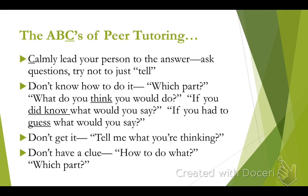The letter C of the ABCs of peer tutoring is to calmly lead your person to the answer. Ask questions — try not to just tell them, because in general it will be a better learning experience if they can figure out what they're not getting. If a student says 'I just don't know how to do this,' ask those specific questions: Which part? What do you think you would do? Questions like, 'If you did know, what would you say?' And my favorite: 'If you had to guess, what would you say?' That takes the pressure off, and eight or nine times out of ten the person will guess correctly. If a student says 'I just don't get it,' ask them a question to help them explain what they mean by that.